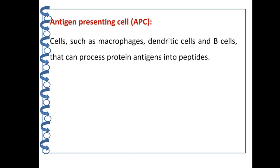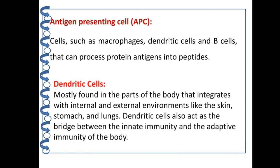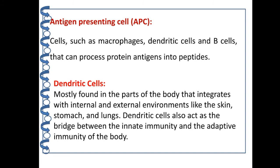Antigen presenting cells, such as macrophages, dendritic cells, and B cells, can process protein antigens into peptides. Dendritic cells are mostly found in parts of the body that interface with internal and external environments, like the skin, stomach, and lungs. Dendritic cells also act as the bridge between innate immunity and the adaptive immunity of the body. These are the different types of cells which provide immunity to our body.